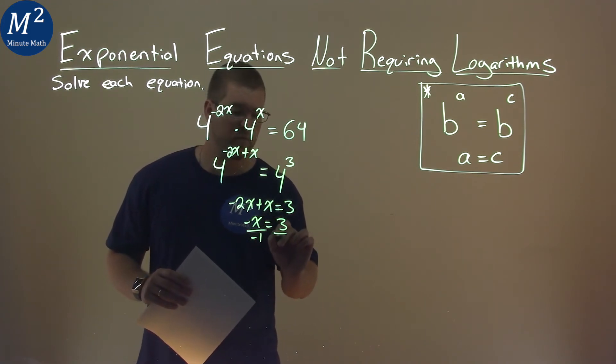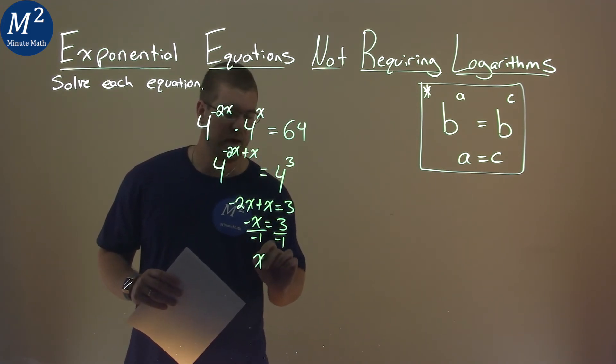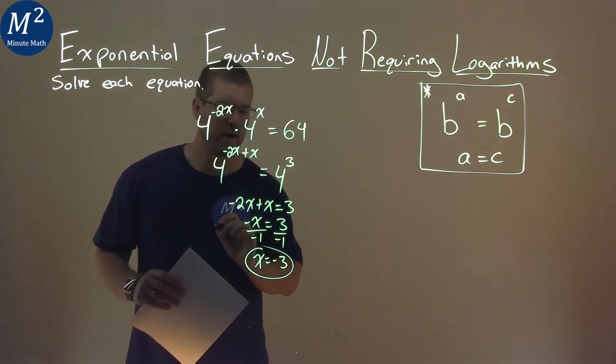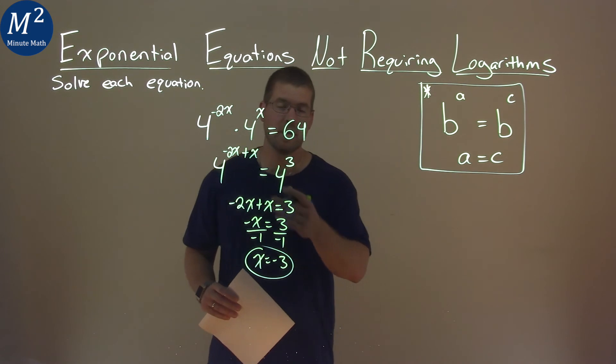Divide both sides by a negative 1, and it's pretty easy. x equals, well, 3 divided by negative 1 is a negative 3. So my final answer here is x equals a negative 3.